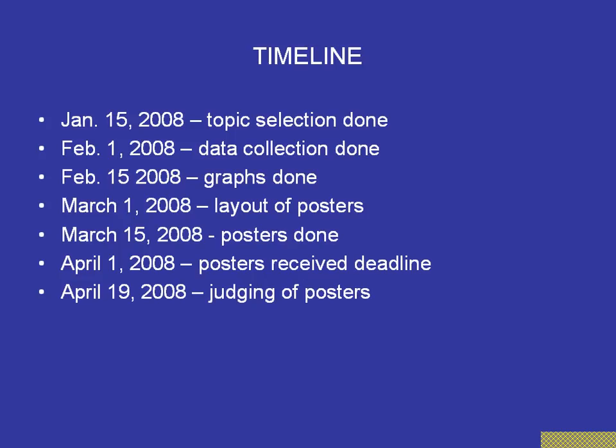In the middle of January, come up with a topic. After a couple of days, give students some brainstorming and feedback on what they might do, then actually collect the data. By the beginning of February, hopefully they have their data collected. By the middle of February, they've made their graphs. By the beginning of March, they've thought about the layout — where the graphs are going to go on the poster, what type of headings the graphs will have, and what the title of the poster will be. By the middle of March, the posters are done. The deadline to receive the posters is April 1st, and poster judging will take place on April 19th.